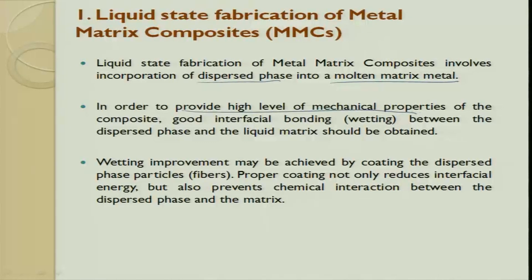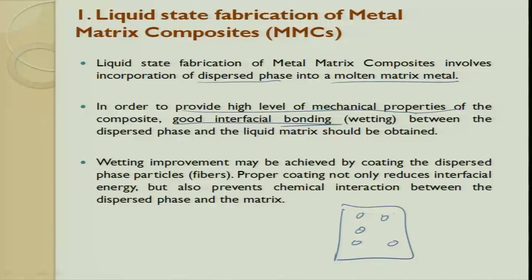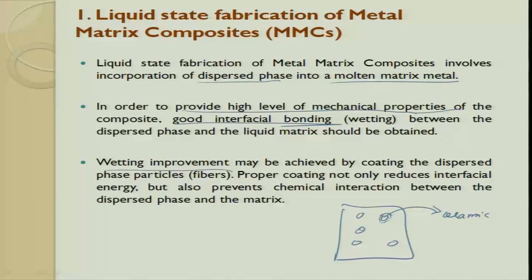In order to provide very high level mechanical properties, good interface bonding is very important. People look at the surface energy of the ceramic particle and the basic nature of the matrix — can these two gel with each other? If there is a weak interface, the ceramic material will just drop out and fall out because there is not much proper bonding with the matrix, and when it falls out it creates a dent. This is why we always talk about good interfacial bond in metal matrix composites between the dispersed phase and the liquid matrix.